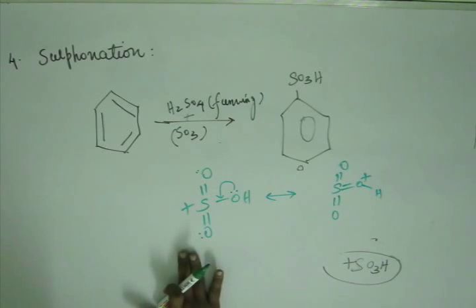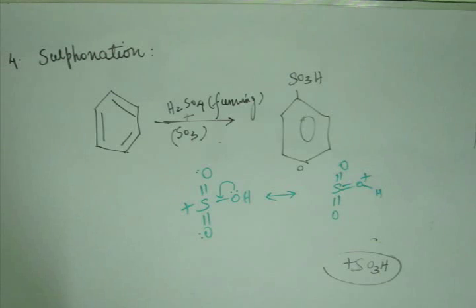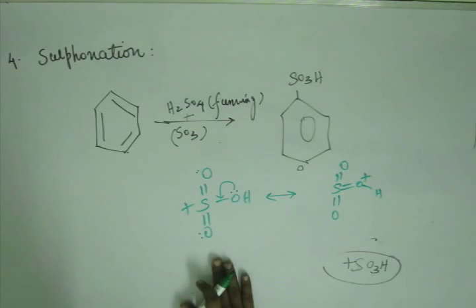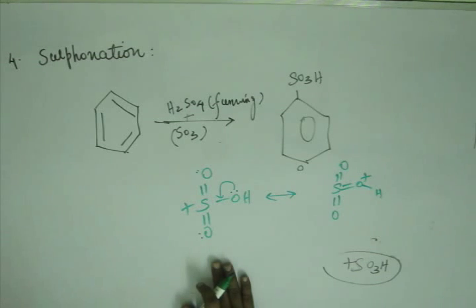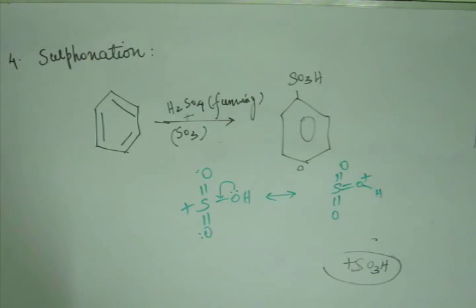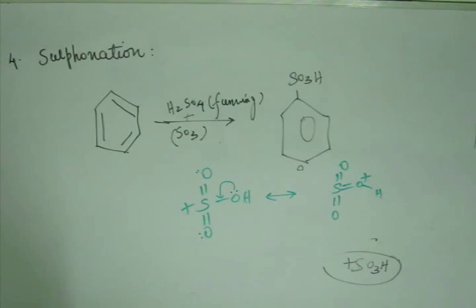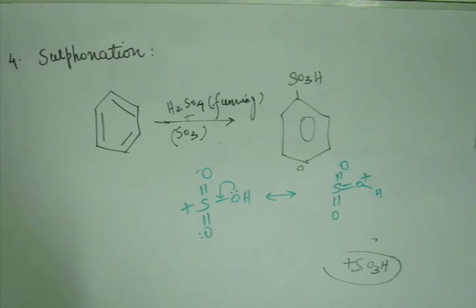So the sulfonyl ion is not unstable, which means its reactivity is lower — it is a weak electrophile because it is stable. Now let's look at the consequences of the sulfonyl ion being a weak, stable electrophile.